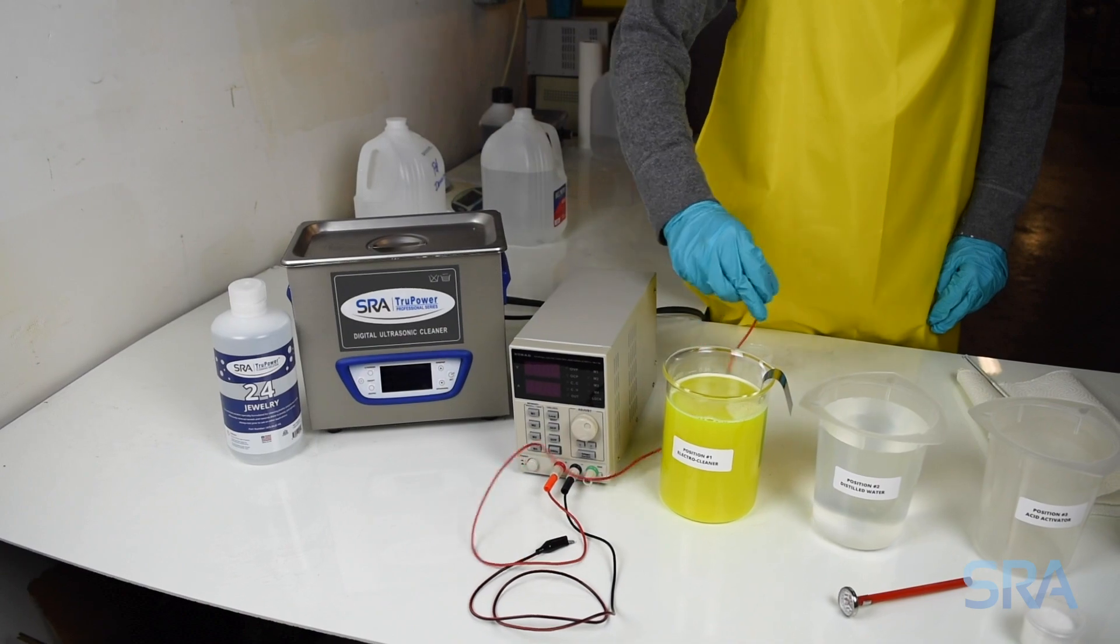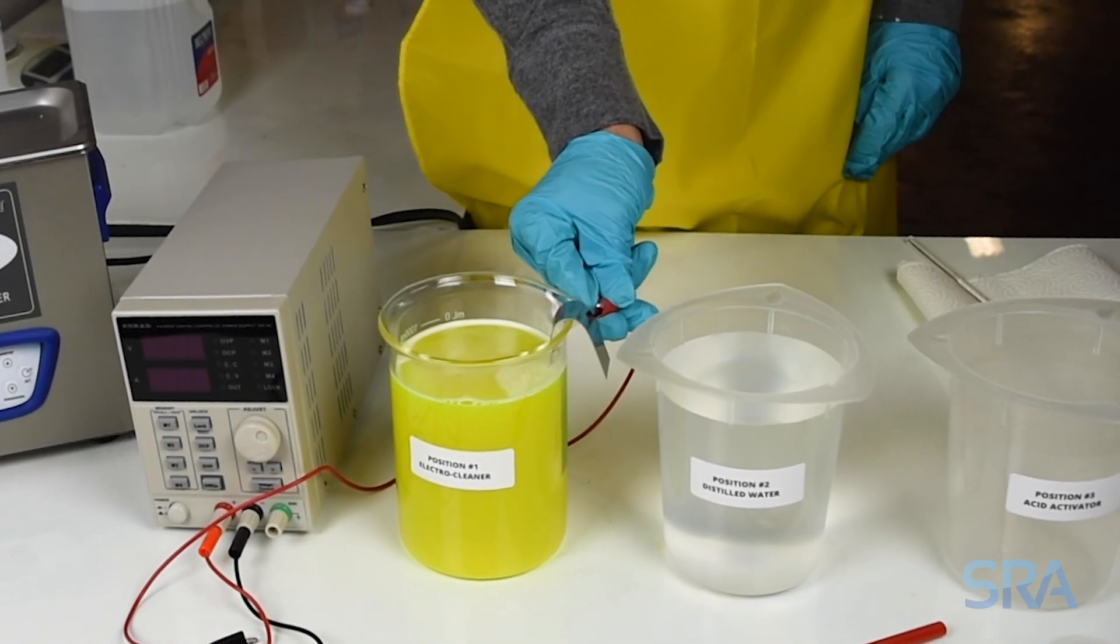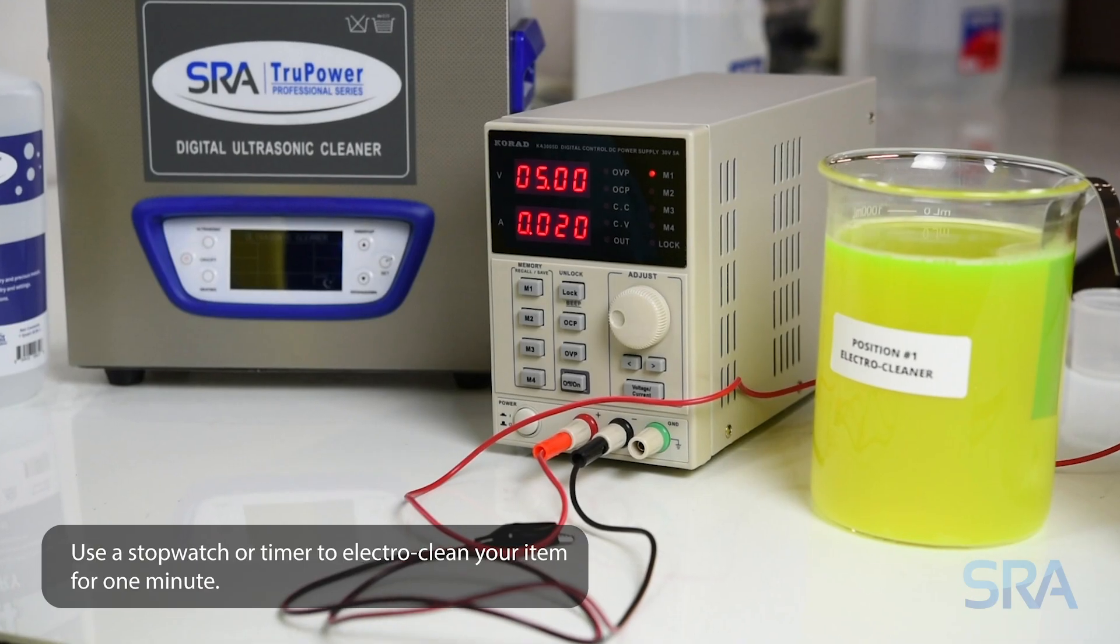Now connect the positive lead from the rectifier to your anode. The rectifier should be set at 5 volts for a one minute period.